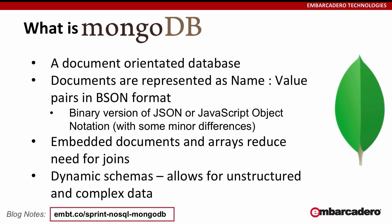So what is MongoDB? MongoDB is a document-oriented database. Documents are stored as name-value pairs in BSON, which is basically a binary version of JSON. It can contain regular name values as well as embedded documents or arrays, which really reduces the need for a join. In a traditional RDBMS you'd have one-to-many, many-to-many, and one-to-one relationships between tables. In MongoDB you don't have that concept — instead you embed the data, so you've denormalized your data into one document. There are also dynamic schemas in MongoDB, so there's no consistent schema. All records don't have to match the same schema, which allows you to deal with much more complex, unstructured data.